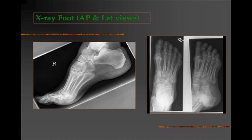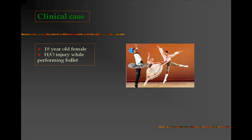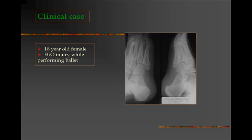Here we have normal x-rays of the foot. The lateral view shows the tarsal bones, the metatarsals, and the phalanges, and the longitudinal arch of the foot is clearly seen. The AP view shows the first to fifth metatarsals and associated phalanges, and an oblique view also shows the metatarsals and phalanges. A clinical case of an 18-year-old female patient who sustained injury while performing ballet shows a fracture at the base of the fifth metatarsal on x-ray of the right foot.